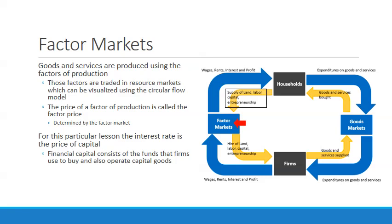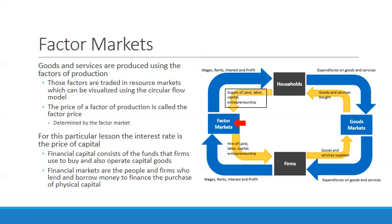Financial capital consists of the funds that firms use to buy and operate capital goods — including technology and machinery used to produce goods and services. Financial markets are where people and firms lend and borrow money to finance the purchase of physical capital, and payment for that financial capital comes in the form of interest.